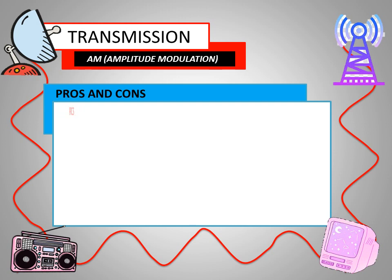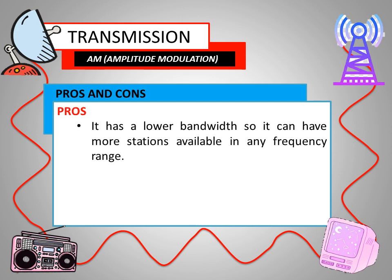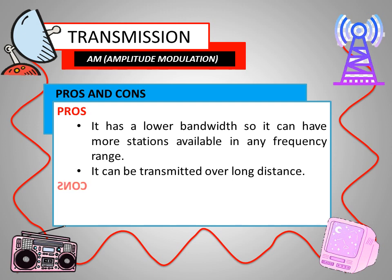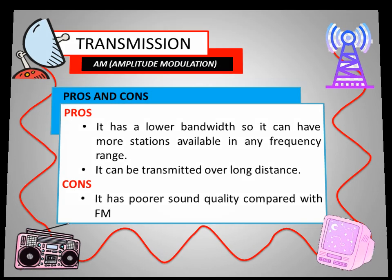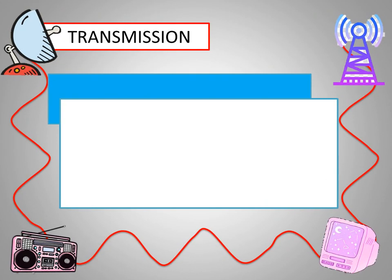As for the pros, AM has a lower bandwidth so it can have more stations available in any frequency range, and it can also be transmitted over long distances. For the cons, it has poorer sound quality compared with FM. Another mode of transmission is FM.